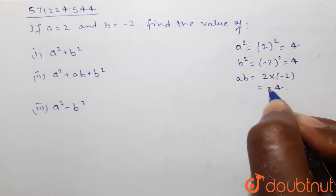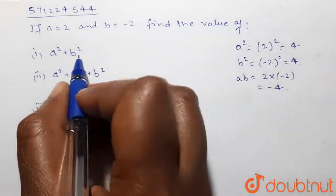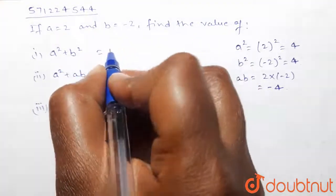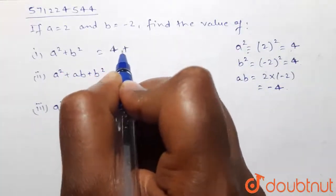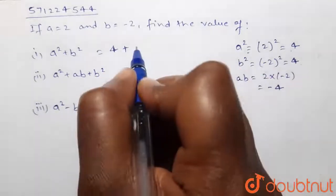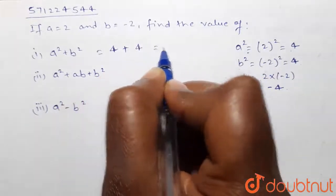Now a² + b² will be: value of a² is 4 plus value of b² is 4, so it will be 4 + 4 which is equal to 8.